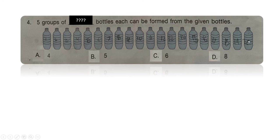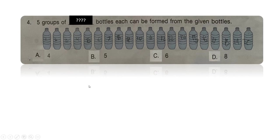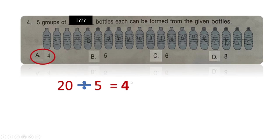Next question: 5 groups of how many bottles each can be formed from the given bottles? You need to choose your answer from option A: 4, option B: 5, option C: 6, or option D: 8. There are 20 bottles given, and we need to make 5 groups. We divide 20 by 5, which equals 4. So the right answer is option A.